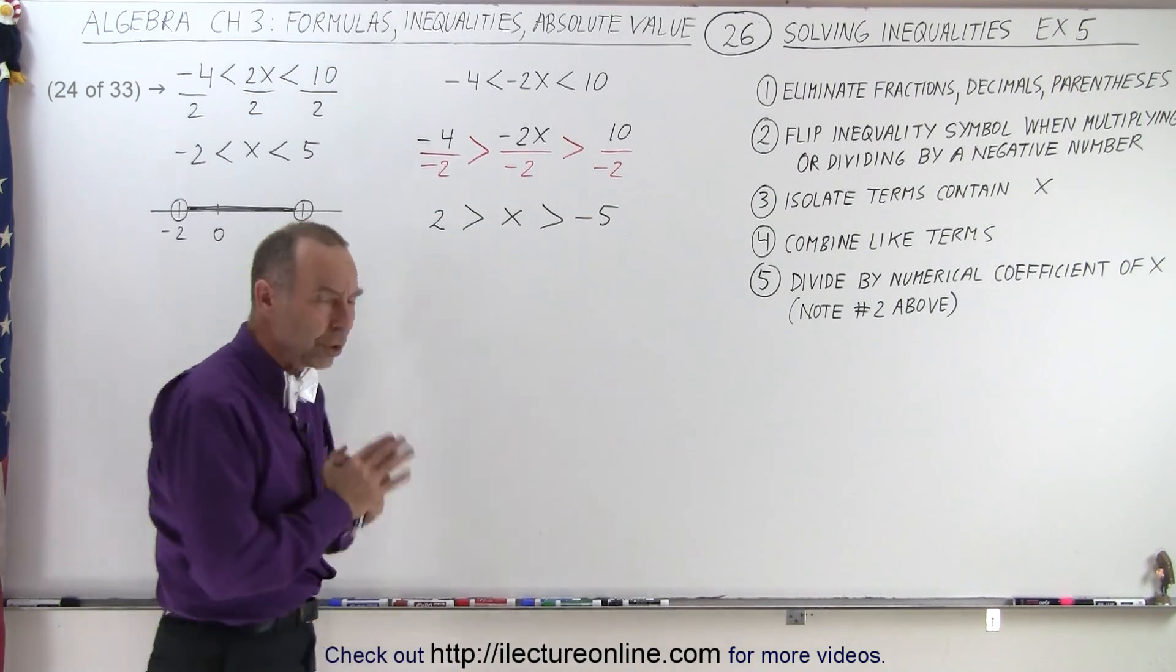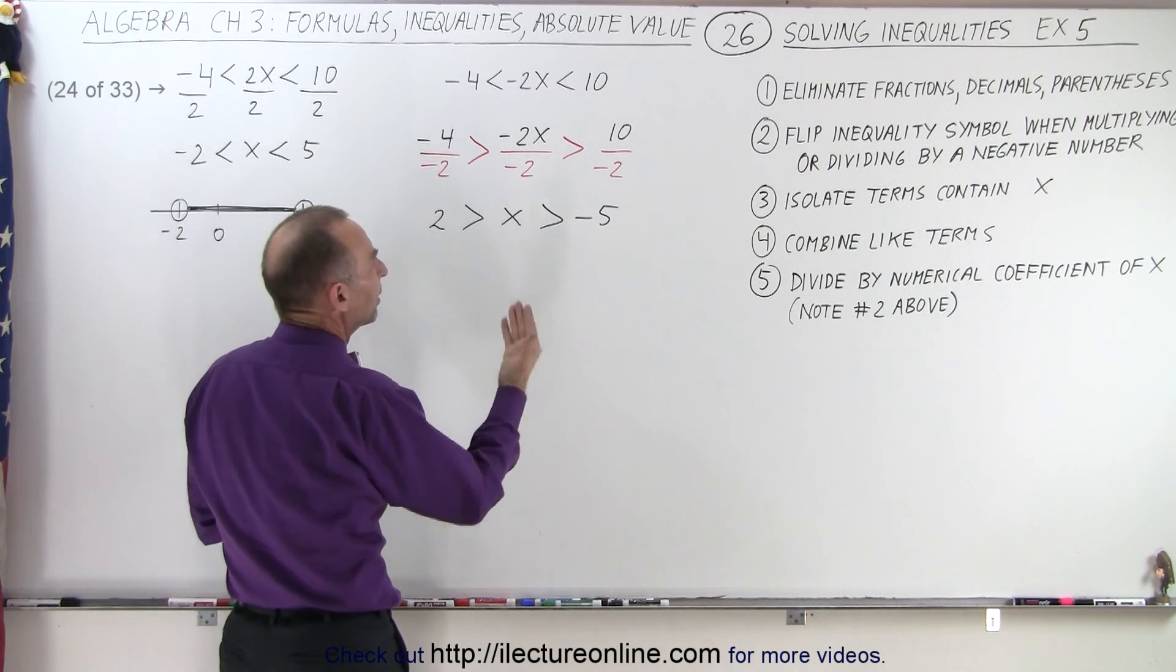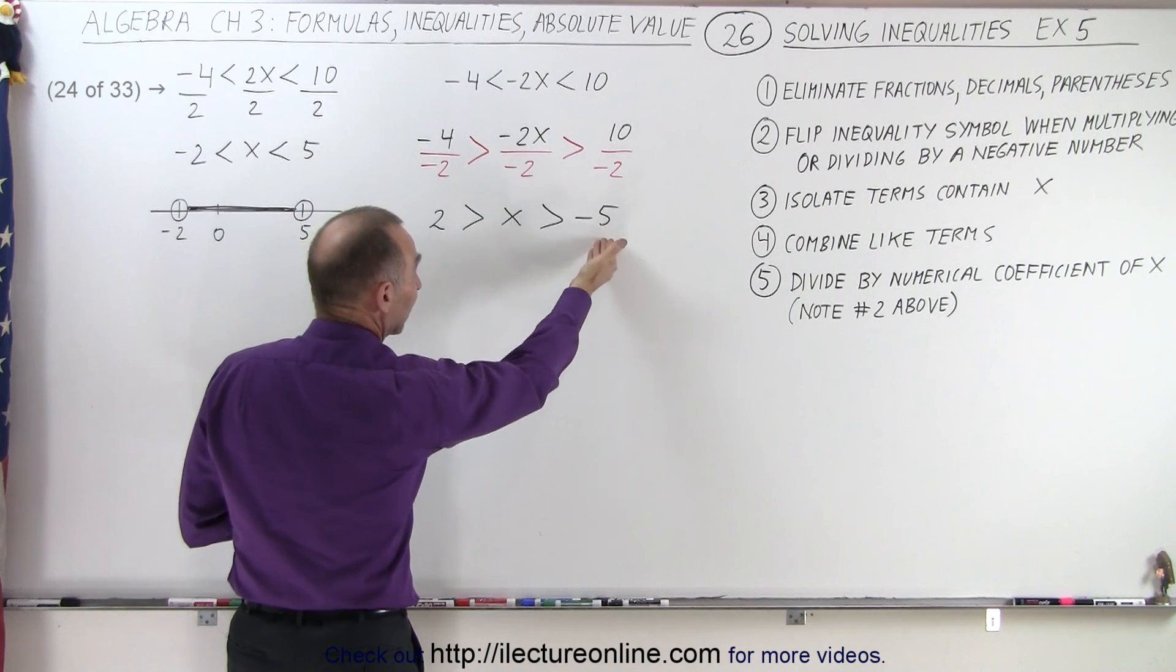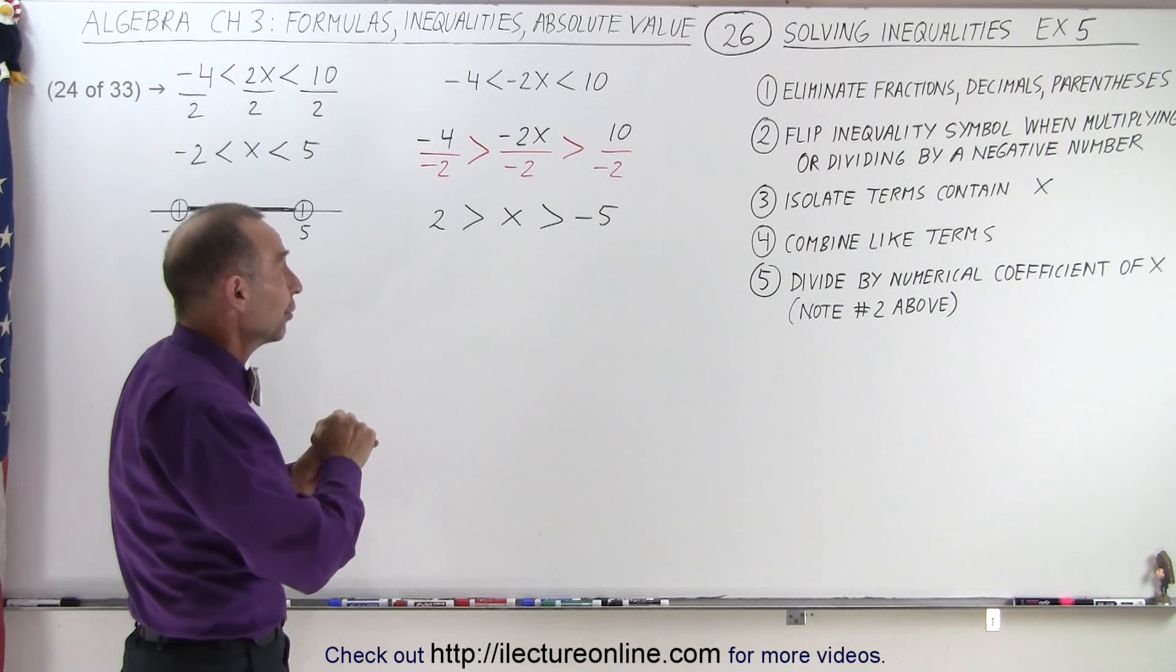Now you will notice that this is kind of different than what we expect to see. We typically like the smaller numbers, like negative numbers on the left side, and bigger numbers on the right side. So this is really kind of flipped over.